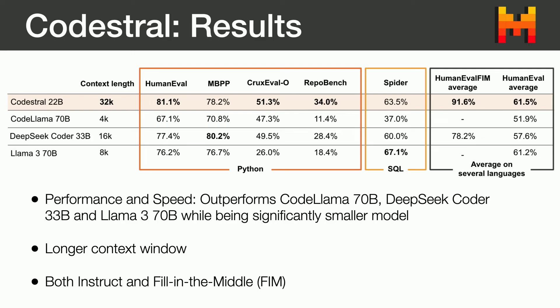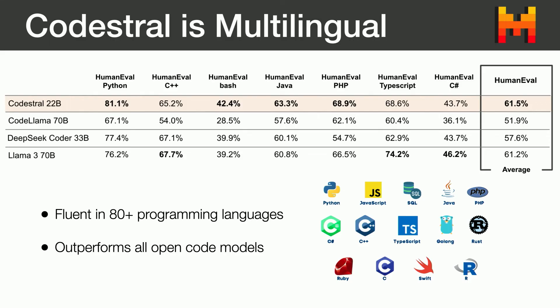We recently released the Codestral model — Codestral 22B. It's a dense transformer model trained specifically for code. We are trying to optimize performance and speed. It's fluent in 80-plus programming languages and has both instruct and fill-in-the-middle mode, which means you can use it for code completion in your code editor — just like GitHub Copilot — but also you can use it to ask questions about bugs or errors you're facing, just like you would with ChatGPT. It outperforms Code LLaMA 70B, DeepSeek Coder 33B, and LLaMA 3 70B while being a significantly smaller model. We are getting more performance out of a model of a particular size, and it also has a longer context window compared to other open source code models.